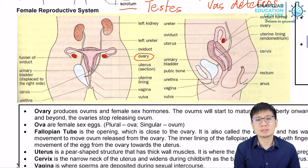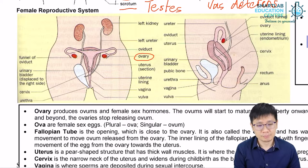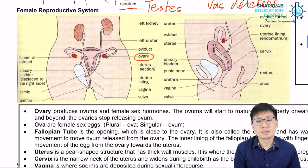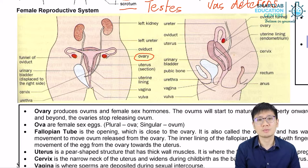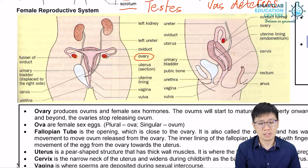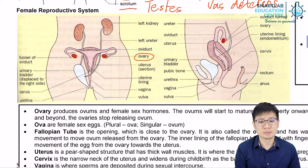The ovaries contain a lot of egg cells — ova. Each ovum is surrounded by many caretaker cells, also known as follicle cells. Each group is known as a follicle.